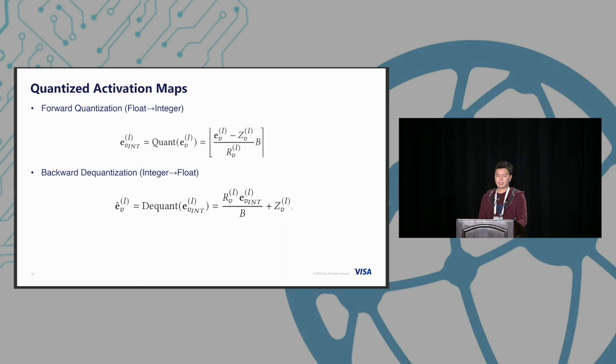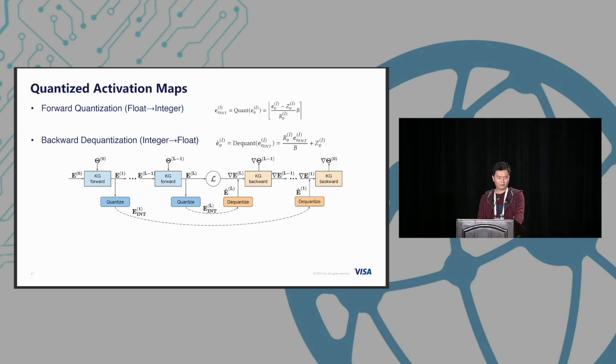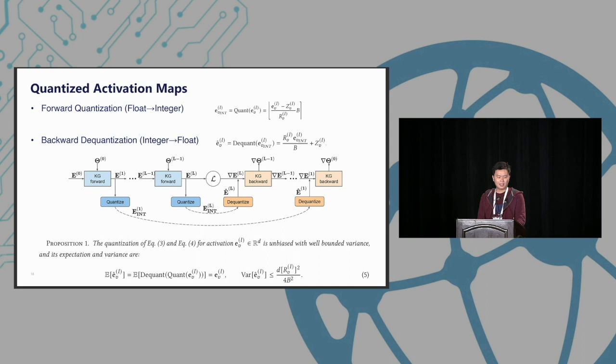This is our computational graph for Tiny KG. In the forward pass we quantize into integers - we can choose int8, int4, int2, int1 - and store in memory. Then in backpropagation we dequantize it. In our original paper we also show that this simple quantization is unbiased and has well-bounded variance. The variance terms correlate to the dimension of embedding d, the number of bits b we want to store, and also the number of layers l.